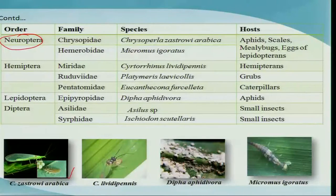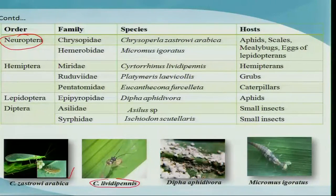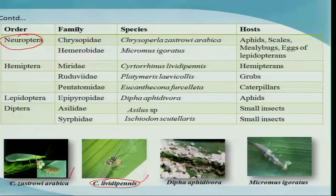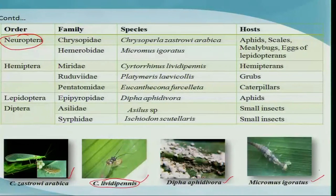Mass production techniques have been standardized for the green lacewing. Under bugs or hemipterans, Cyrtorhinus lividipennis is quite effective against hemipteran bugs, especially the brown planthopper. Under Lepidoptera, there are certain predators like Eublemma amabilis. The brown lacewing Micromus igorotus is also a quite effective predator. These are some of the important groups of predators normally employed in the biocontrol program.